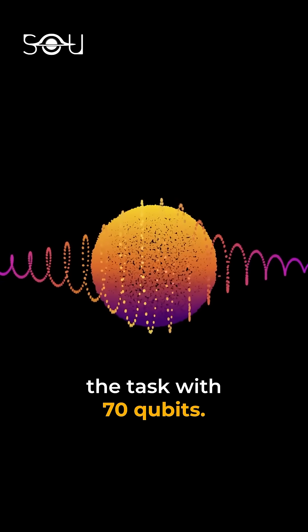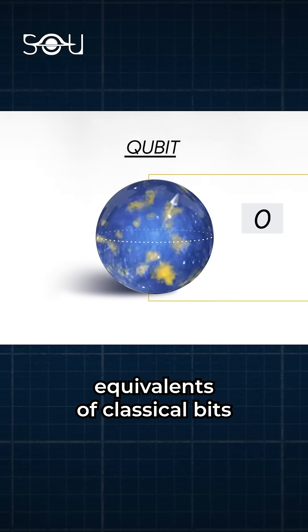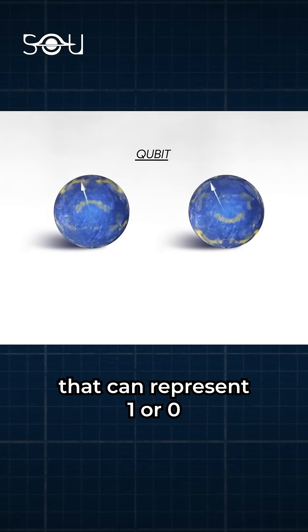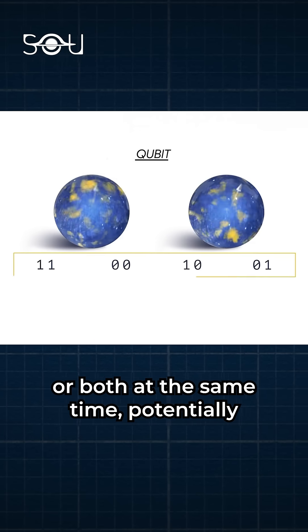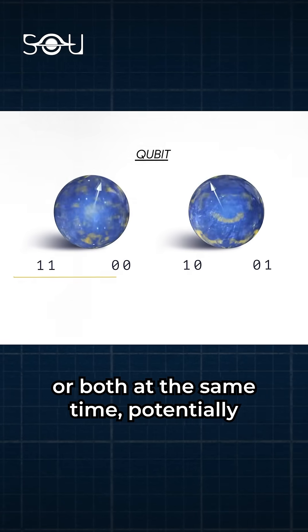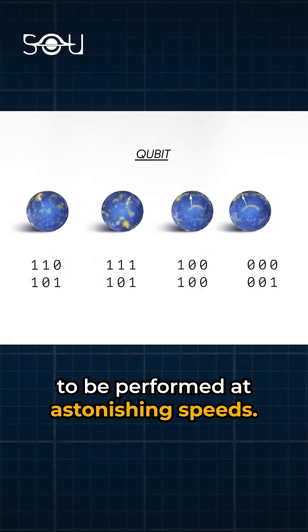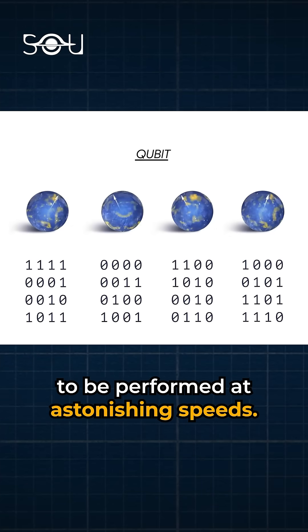Sycamore performed the task with 70 qubits. Qubits are the quantum equivalents of classical bits that can represent one or zero, or both at the same time, potentially allowing for certain calculations to be performed at astonishing speeds.